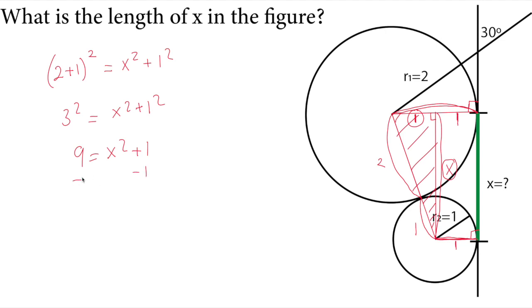We subtract one from both sides. x squared equals eight and x will be the square root of eight. So this is our solution.